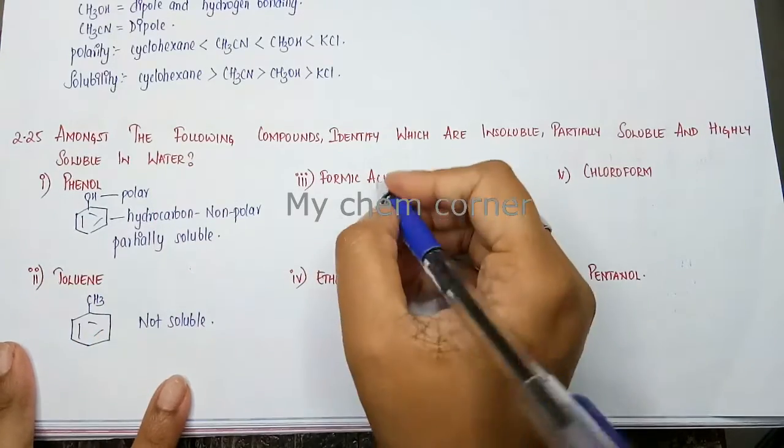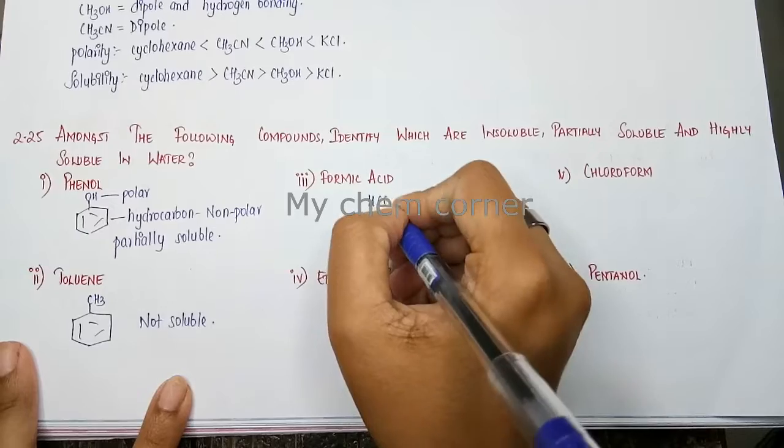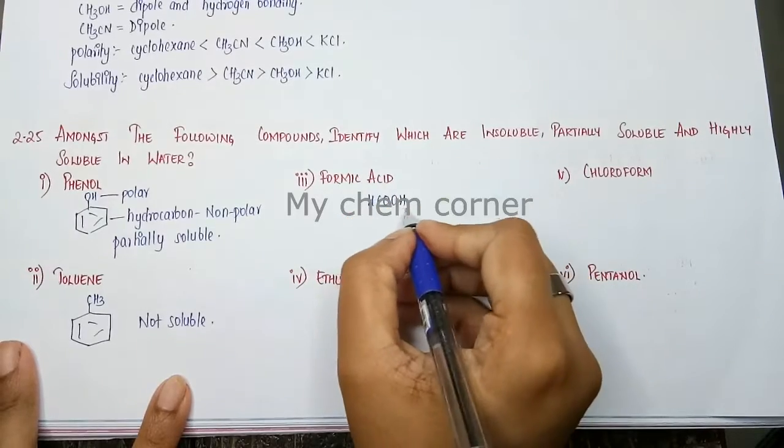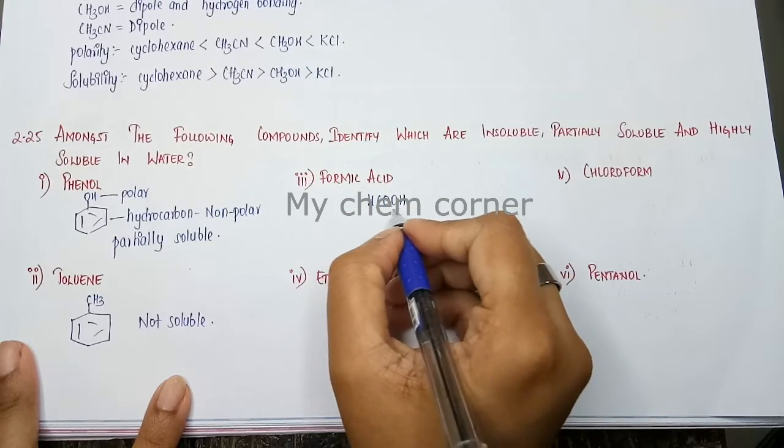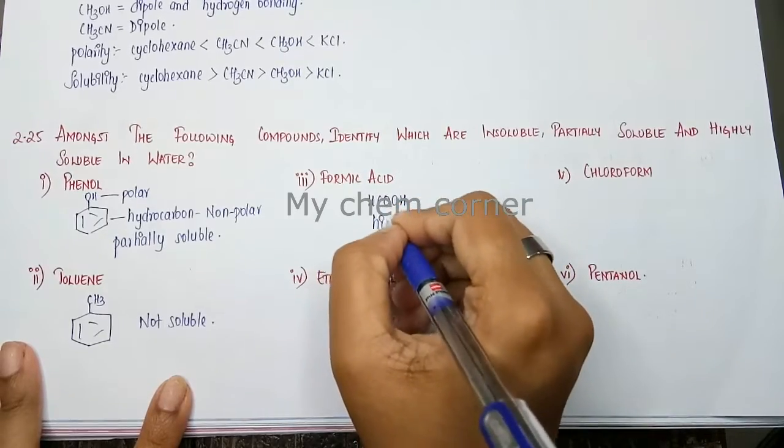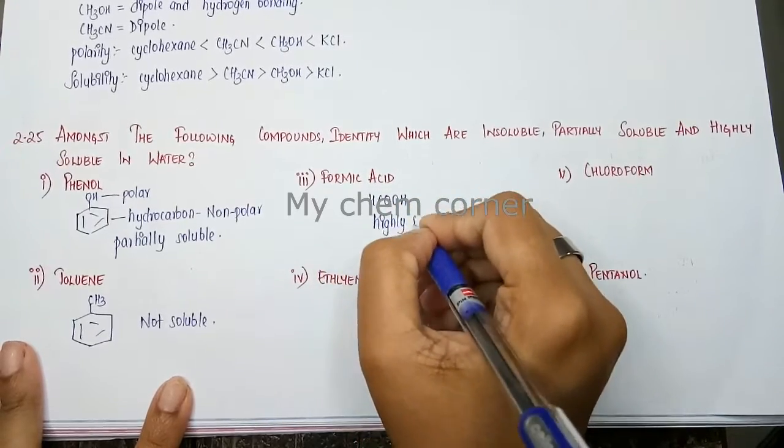Third one is formic acid. Formic acid is HCOOH. Here you have a polar compound. Therefore, this one is highly soluble.